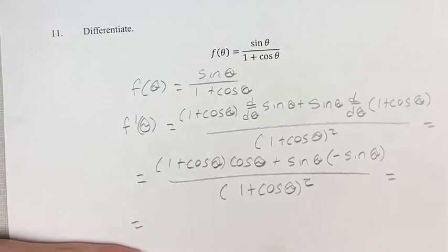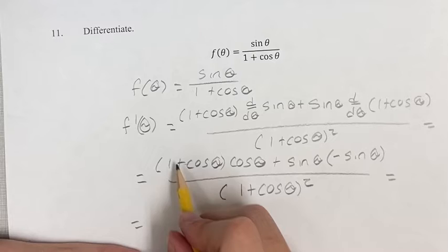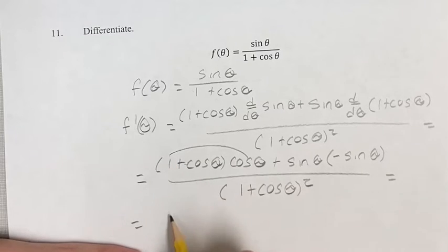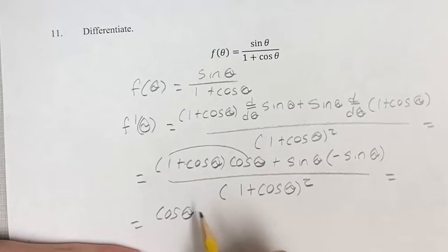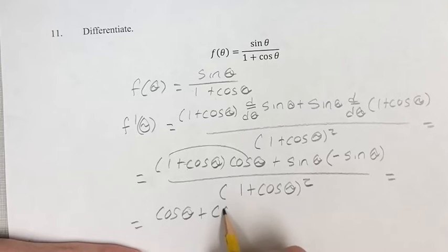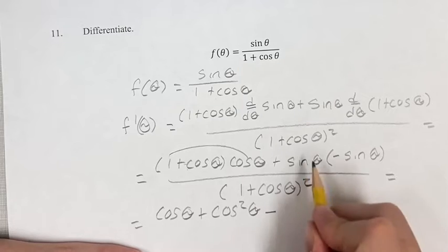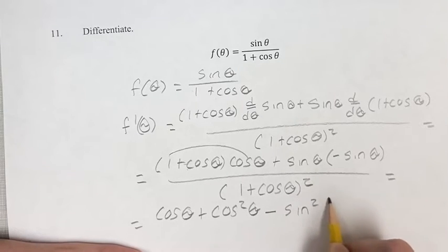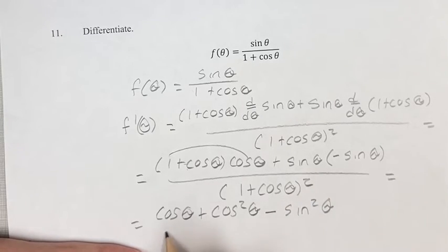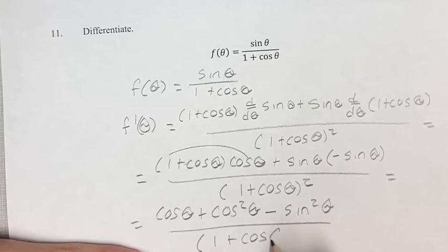Simplifying the top, we have cosine theta times 1 is cosine theta, plus cosine theta times cosine theta is cosine squared theta, plus sine theta times negative sine theta is minus sine squared theta. This is all over 1 plus cosine theta squared.